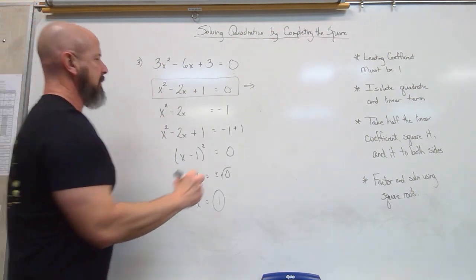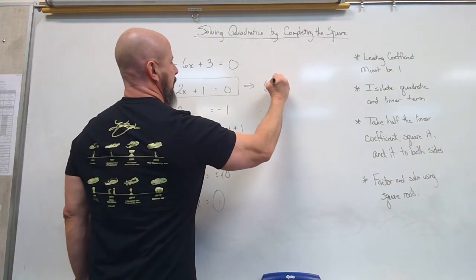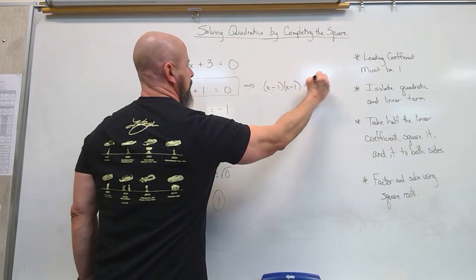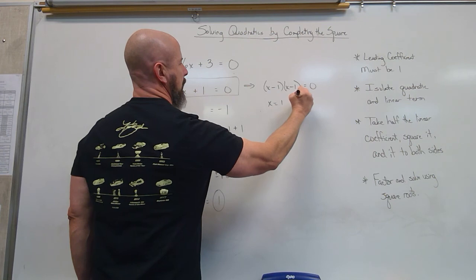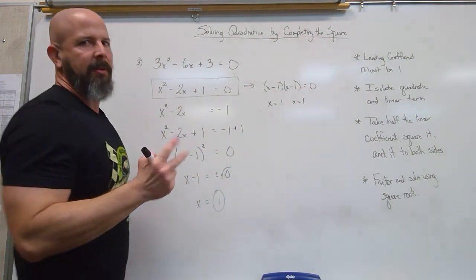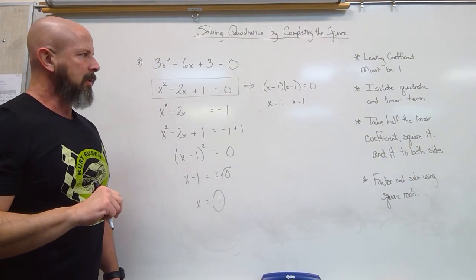So if you were to factor this, it would actually factor to x minus 1. x minus 1 is 0. Solved by factoring. x equals 1. x equals 1. So there really is two 1's there. That's what we call a double root.